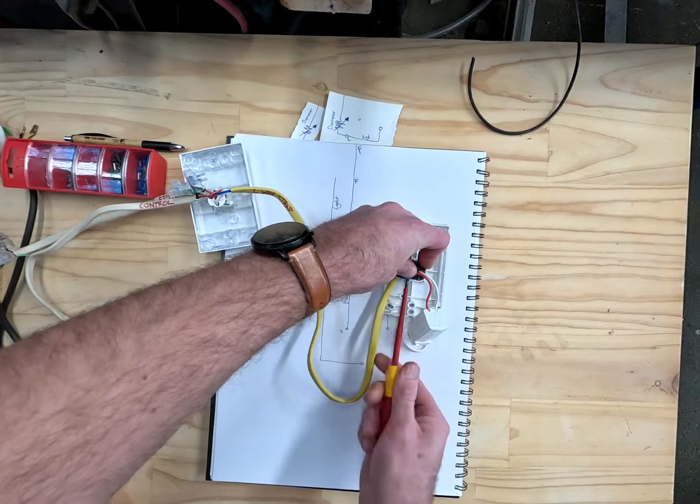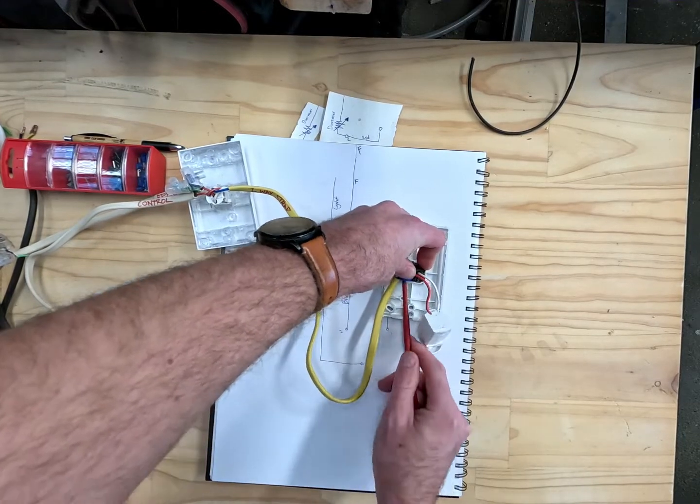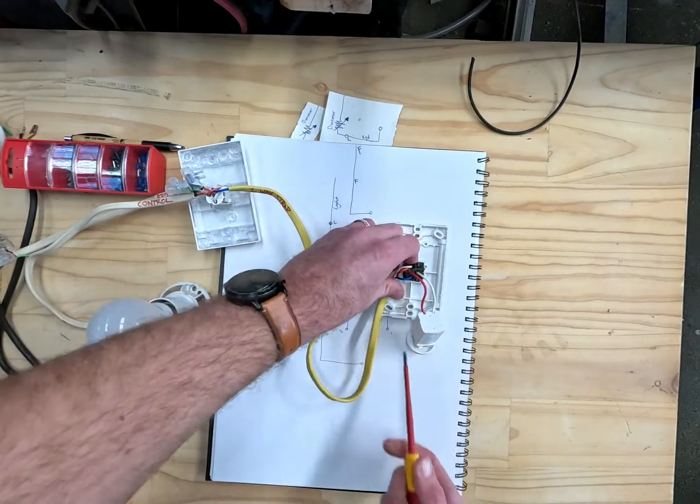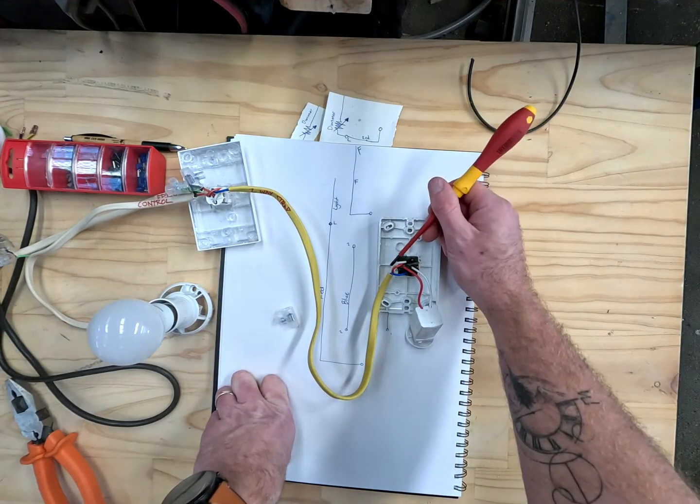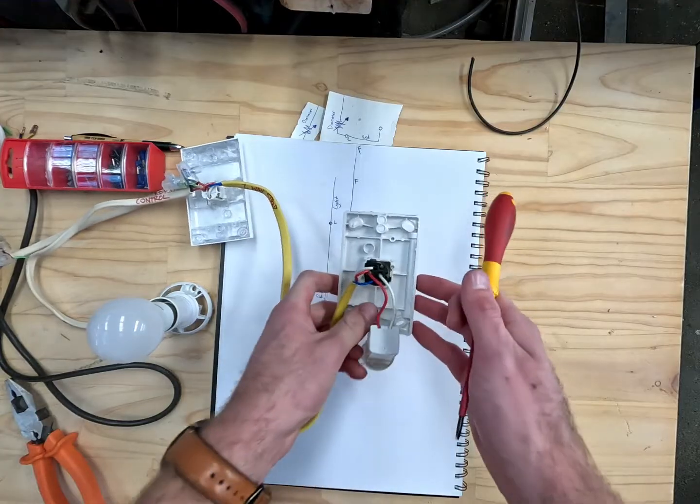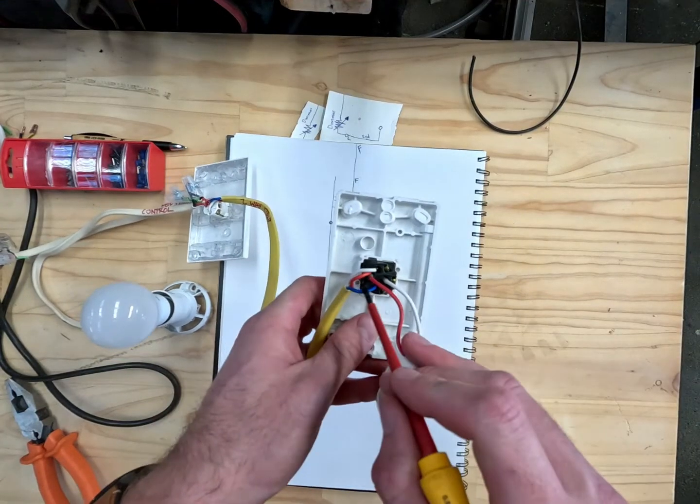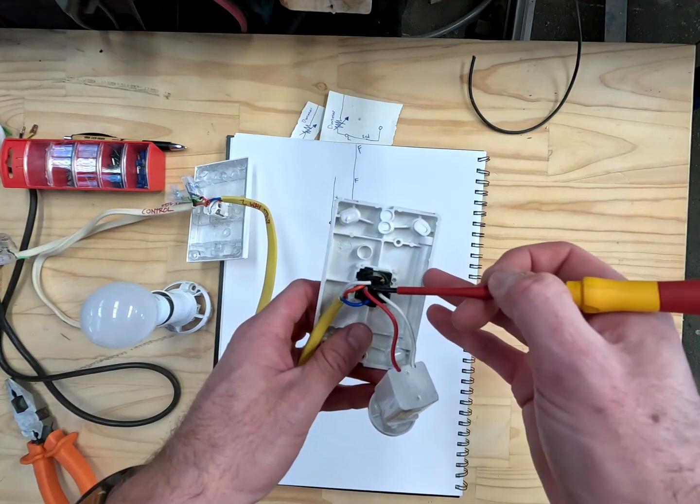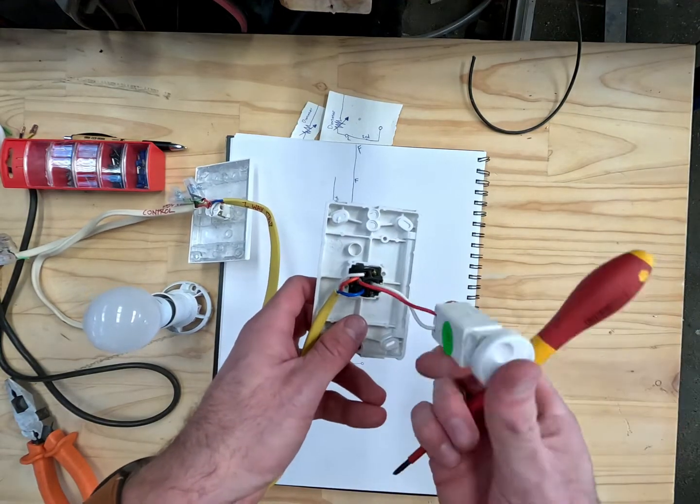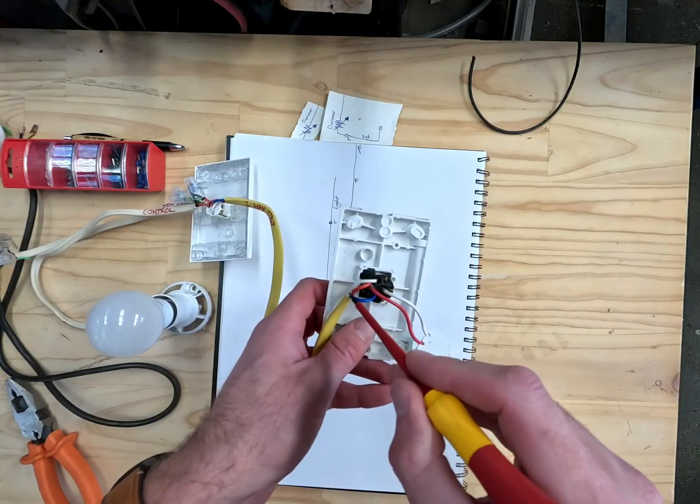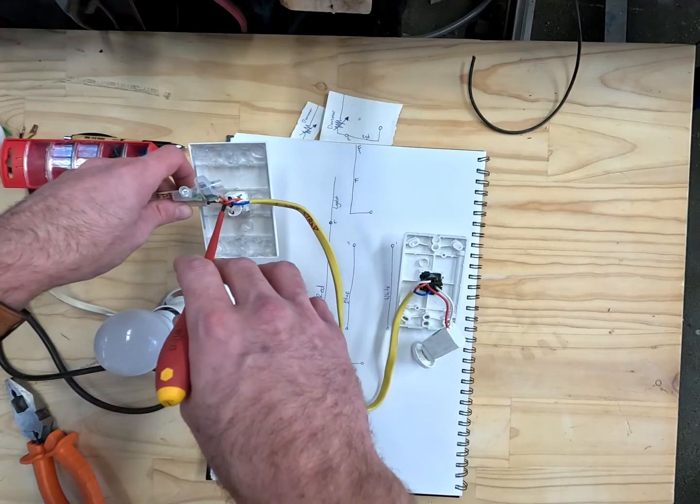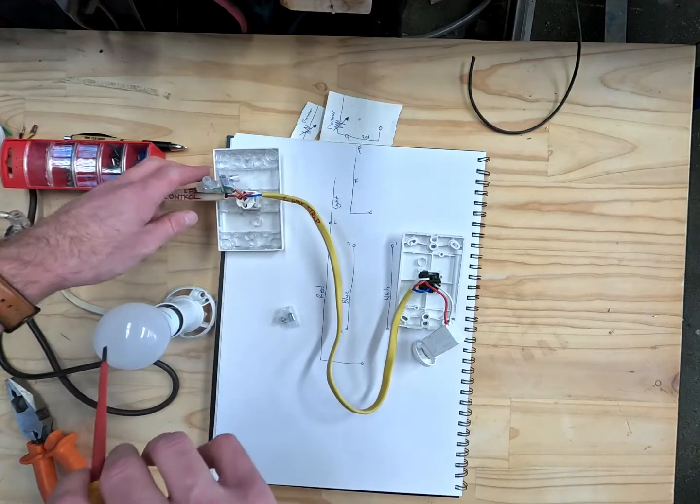So I've just used the two-way from my other video. If you haven't seen that, you can go have a look and see how the two-way works. But what I've done is when the power comes in on either the white or the red cable, just have to make a correction here, the blue cable not the red cable, it then switches to the common through the dimmer back on the red cable to our first switch through our first switch in the loop terminal and back to the light.